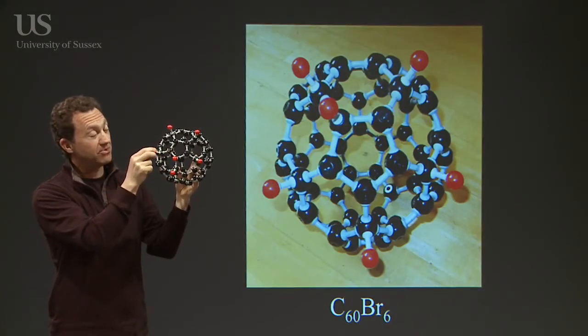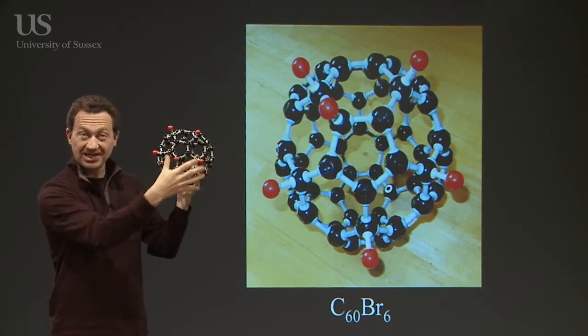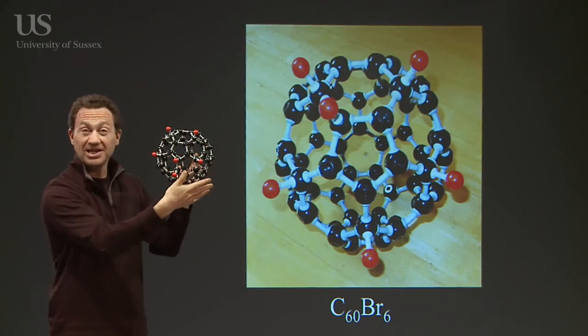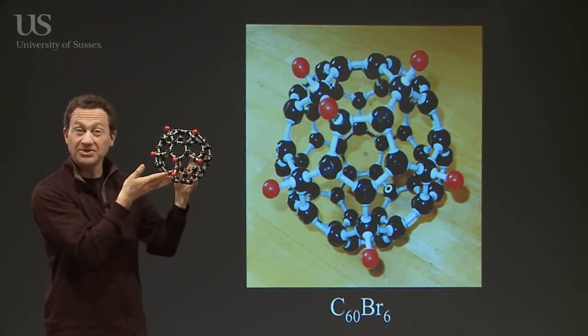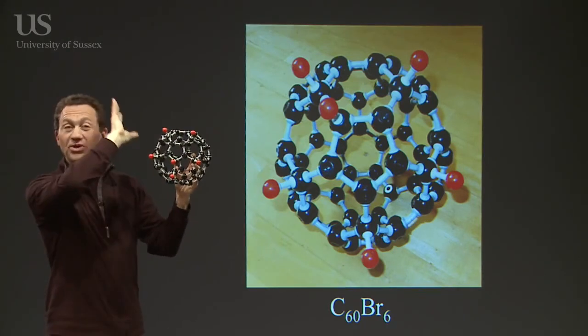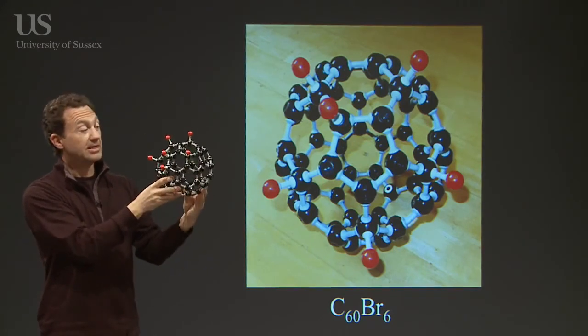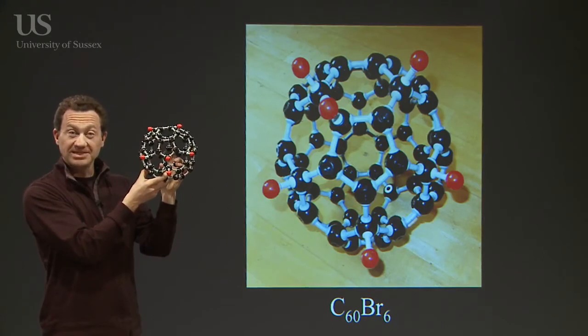Presumably as the first bromine goes on the ball, it changes the chemistry subtly so that when the other bromines go on, it doesn't form what the simple calculations predicted - it forms something else. I love that this whole thing is stimulating not only the experimental side but also the theoretical side. So that's C60Br6.